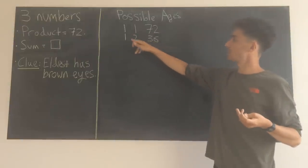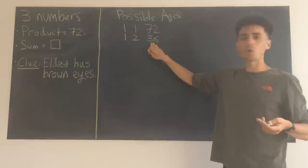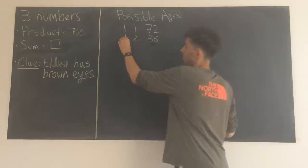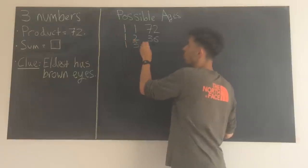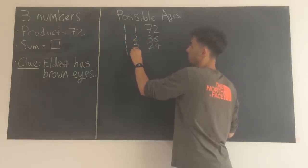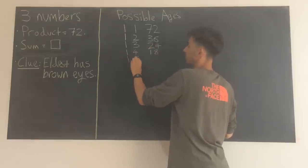Again, they multiply to give 72. Not like the ages for three sisters, but we're following this order. So we're going to go 1, 3, 24, 1, 4, 18, 1, 6, 12, 1, 8, 9.